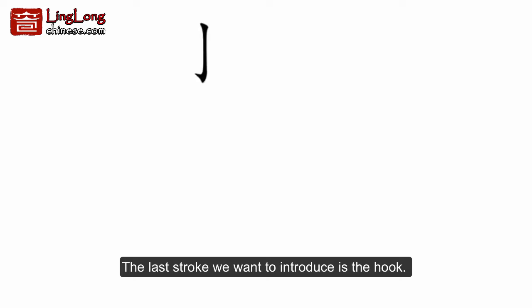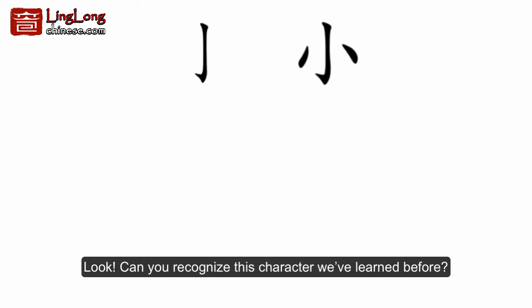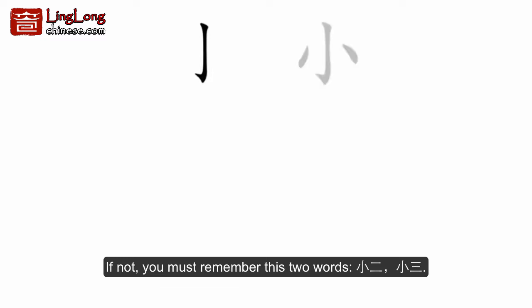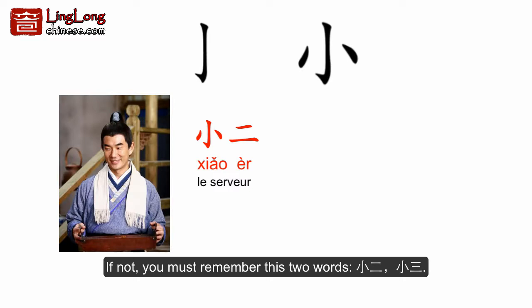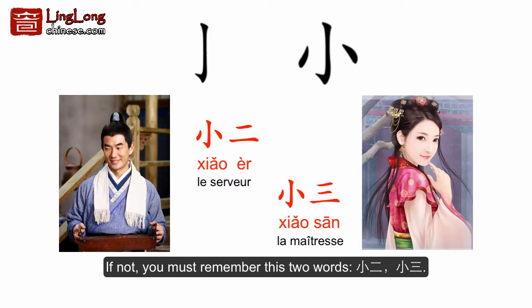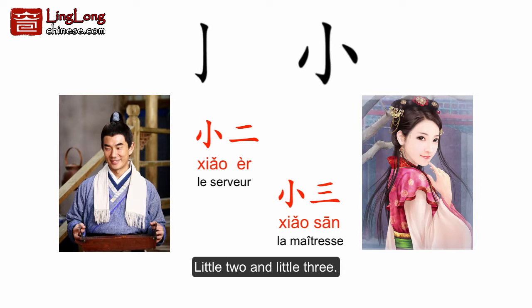The last stroke we want to introduce is the hook. Look, can you recognize this character we've learned before? If not, you must remember these two words: 小二 and 小三 — little two and little three. So 小 means little, small.